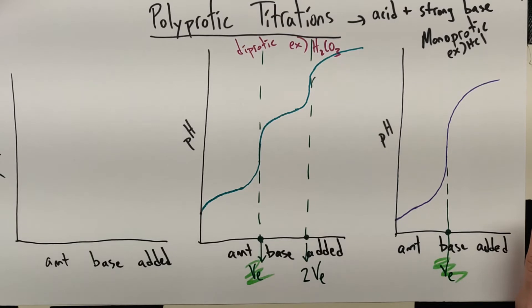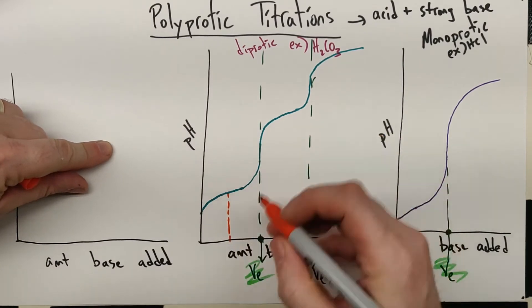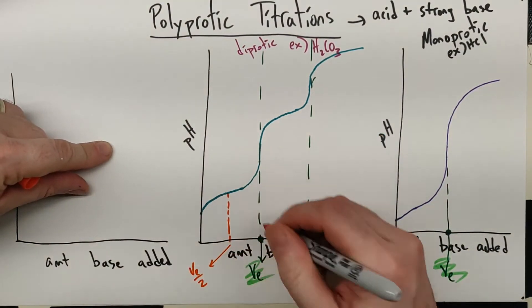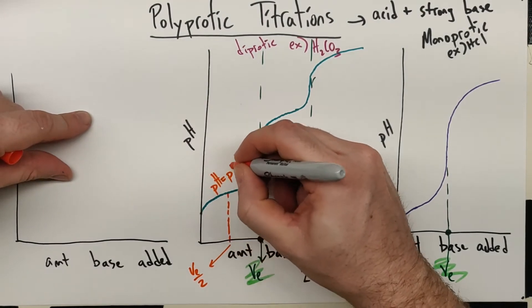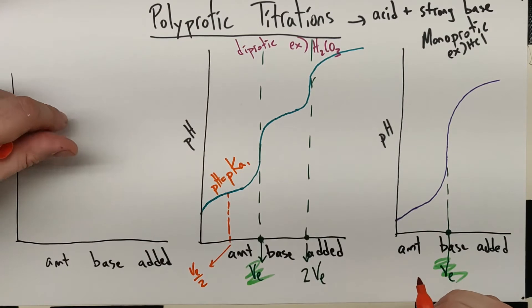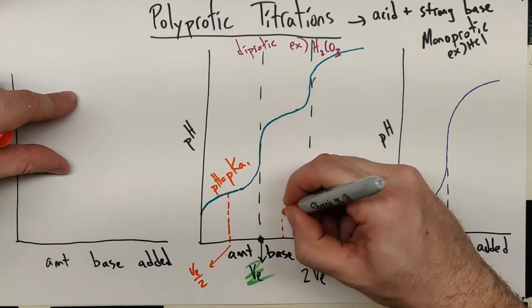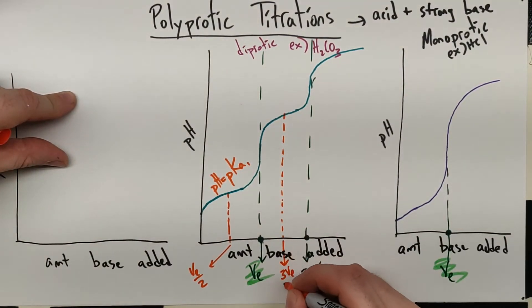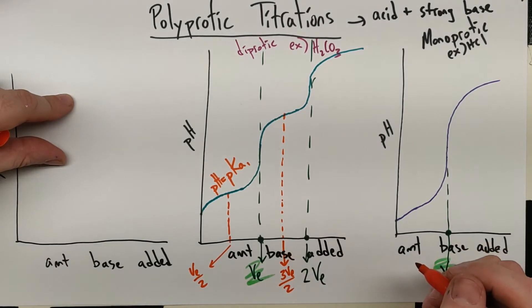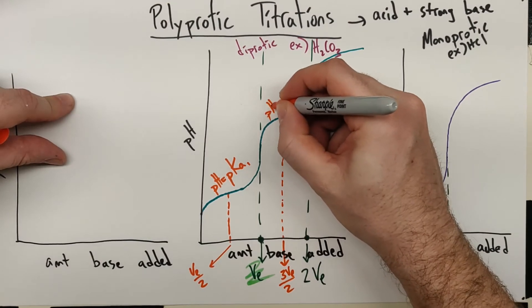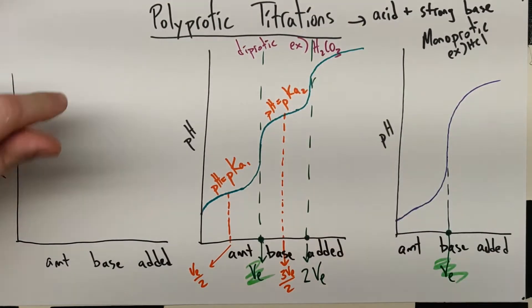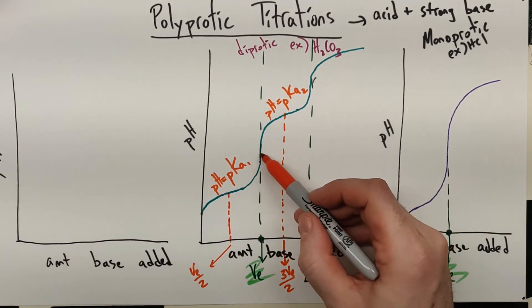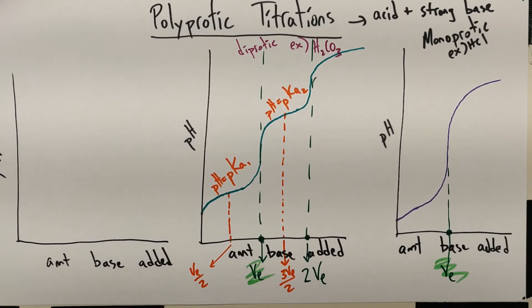Then in terms of buffer regions and things that we had discussed previously, we've got halfway to our equivalence point. This is VE over 2. Our pH is going to be equal to pKa1, the ionization constant for removing that first H. And then right here we have 3 VE over 2. And that is pH equals pKa2. And so our equivalence points, this will end up slightly basic, this will end up more basic. You might not even be able to see both humps there because sometimes getting that second H off is really a challenge.